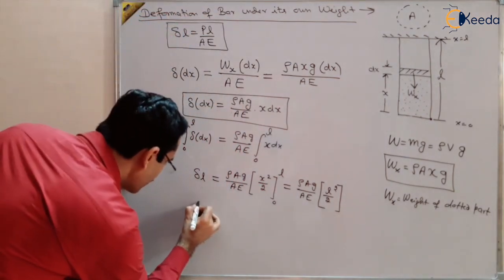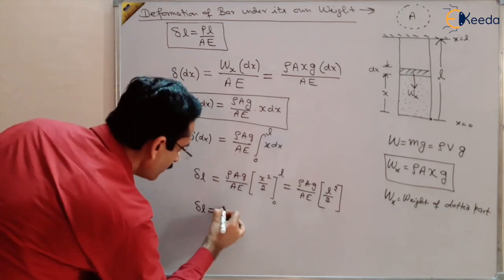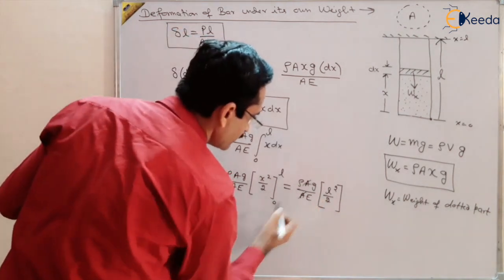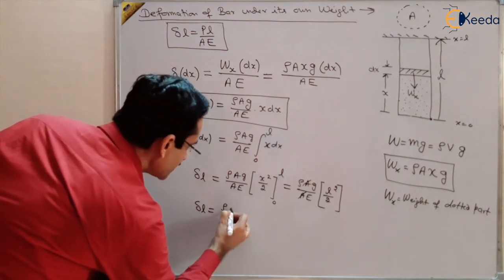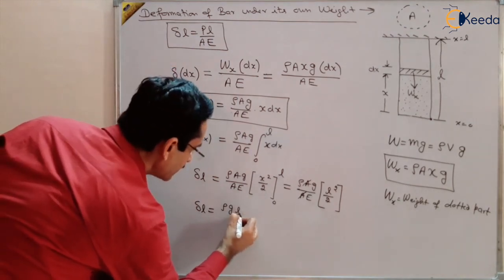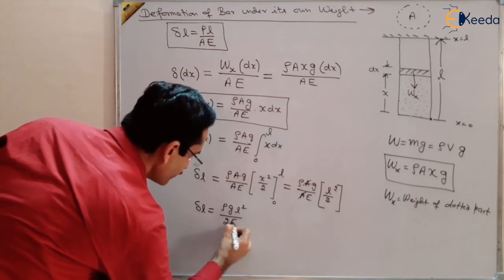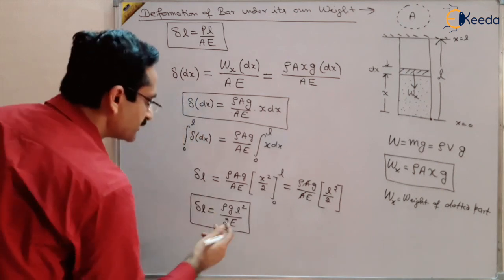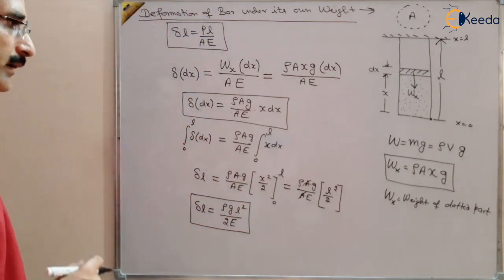So the total deformation δL = ρgL² / 2E. This is the deformation in the bar due to its own weight.